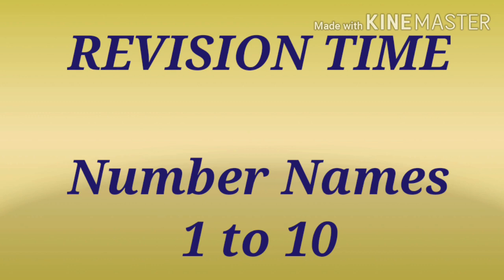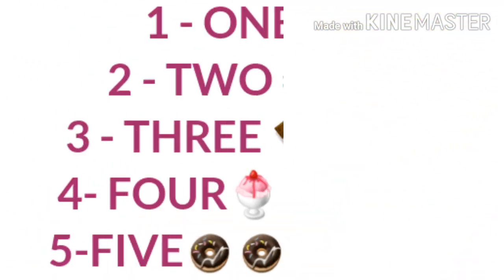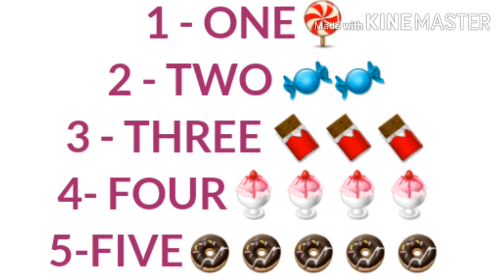Let's revise number names 1 to 10. See the number 1 and the spelling is O-N-E. Number 2 and the spelling is T-W-O. Number 3: T-H-R-E-E. Number 4: F-O-U-R. Number 5: F-I-V-E.